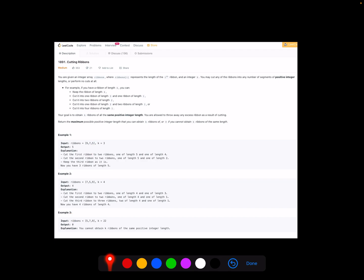The third example is we will return 0 because the requested k is 22, but at most we can only get 21 parts of ribbons.